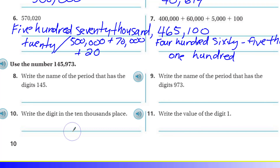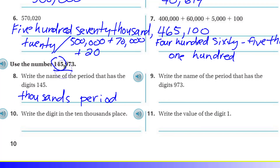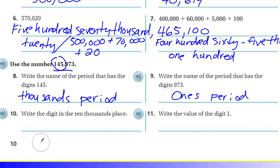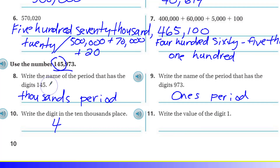Now use the number 145,973. Number eight: write the name of the period that has the digits 1, 4, 5 — that's the thousands period, as shown by the comma. Number nine: the period with digits 9, 7, 3 is the ones period. Number ten: the digit in the ten-thousands place is 4. Number eleven: the value of digit 1, located in the hundred-thousands place, is 100,000.